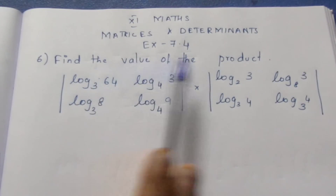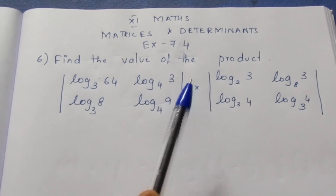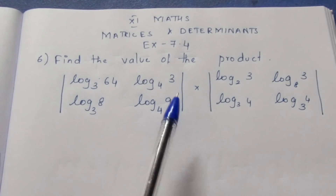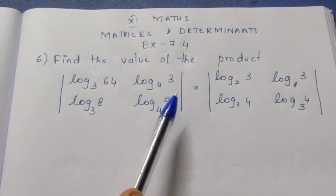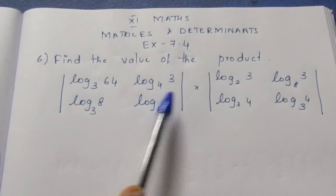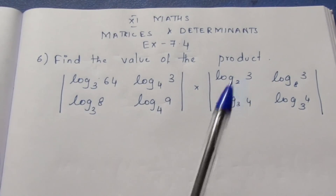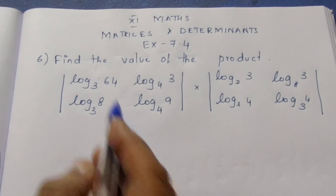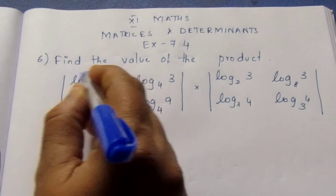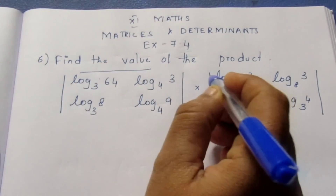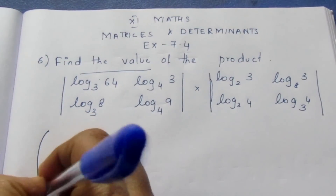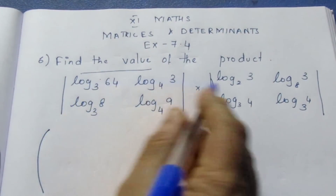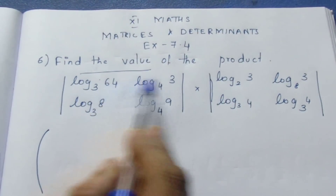Now, this is the first multiplication. The first multiply is the matrix. We can do one matrix multiplication. We can solve this by doing row into column — row into column.